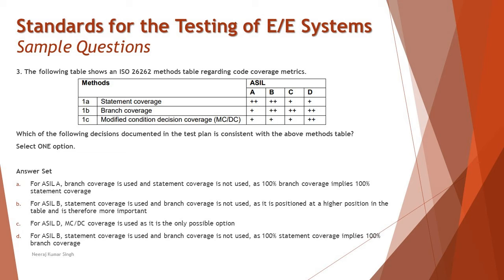Question three presents an ISO 26262 method table regarding code coverage matrix. The question asks which decision documented in a test plan is consistent with the method table. This depends on your analysis of the table. Remember: '+' means recommended and '++' means highly recommended. When methods are labeled 1a, 1b, 1c, they are alternatives — you may choose any one. When labeled 1, 2, 3, they are separate methods and you must address all of them.